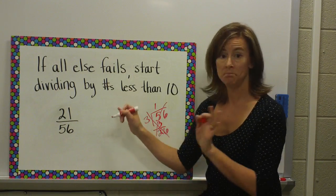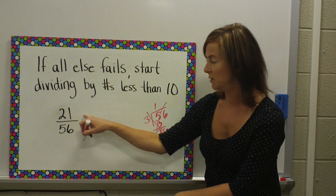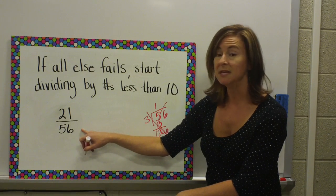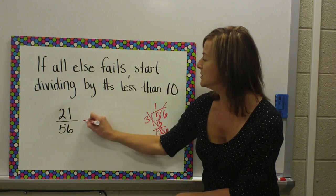7, well, 7 times 3 gives me 21. So, let me think about 56. 7 times 8 gives me 56. So, in this case, by just going through my numbers less than 10, I'm able to find a common factor that I can divide both of these by.